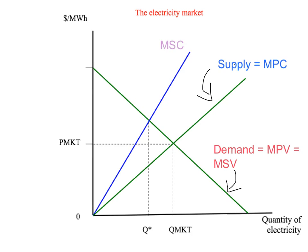That gap tells us, for any particular unit, what is the marginal external pollution cost associated with producing that unit of electricity. The market quantity will be where our demand curve and our supply curve intersect, giving us the perfectly competitive market quantity, Q market. But that's inefficient — it's associated with too much production. The socially efficient quantity is where the marginal social cost equals the marginal social value, at a quantity of Q star. So we get excessive production in the market, which leads to a deadweight loss. We want to think of a government policy to solve that problem.